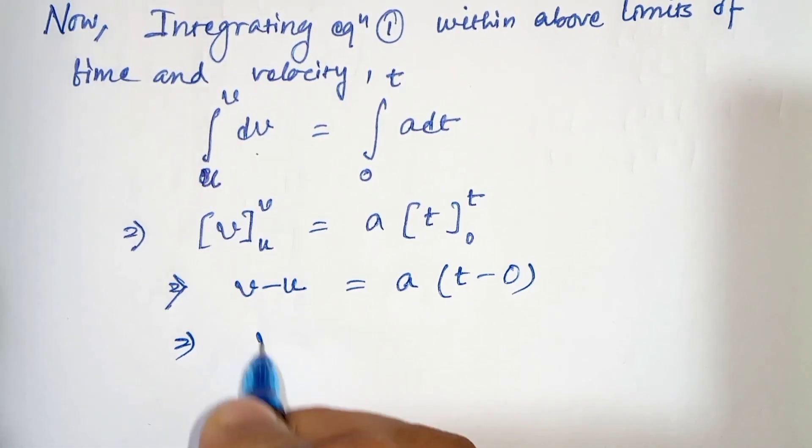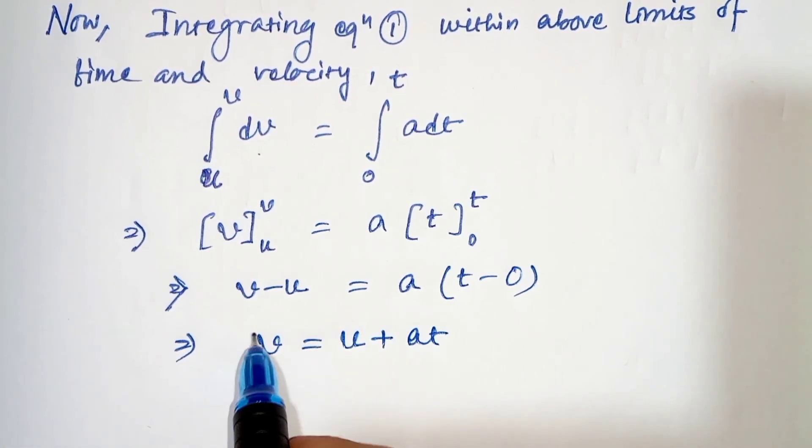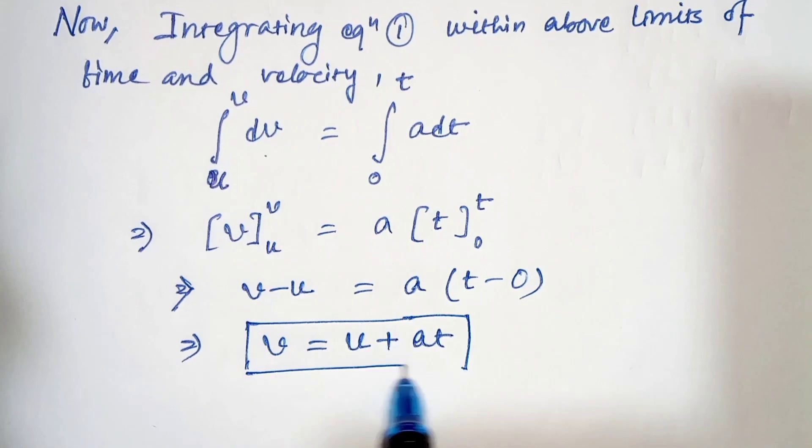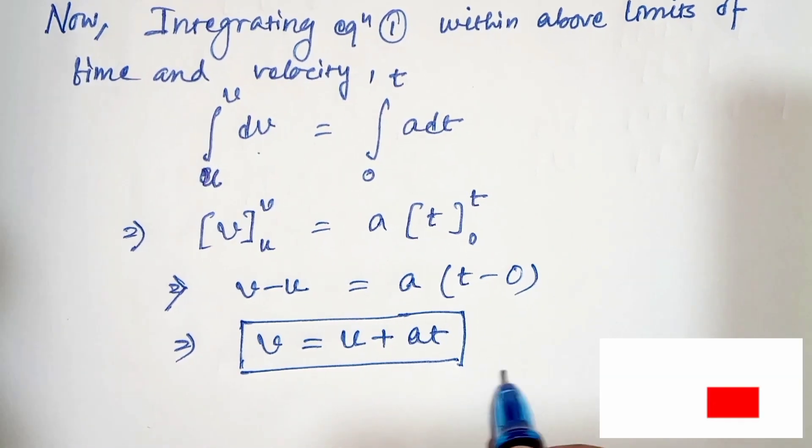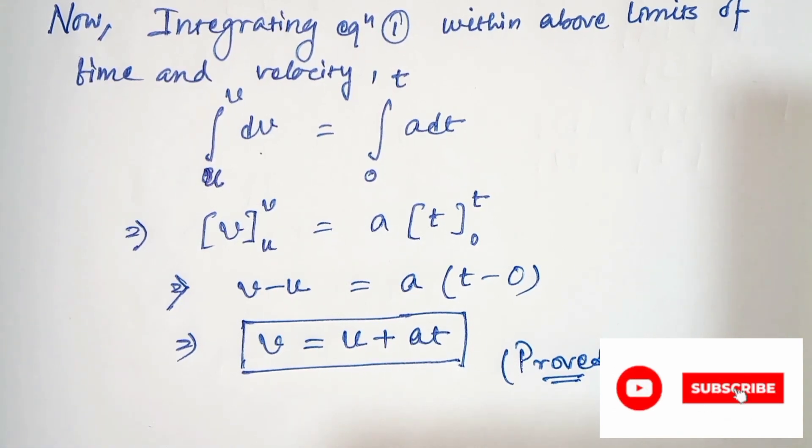So from this we get v equals u plus at. This was our equation of motion. We have proved it. Thanks for watching.